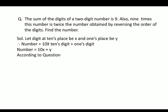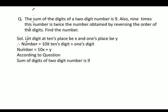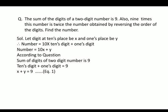According to the question, the sum of the digits of the 2-digit number is 9, meaning the 10's digit plus the 1's digit equals 9: x plus y equals 9. That is equation number 1.